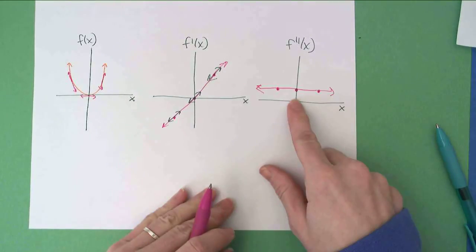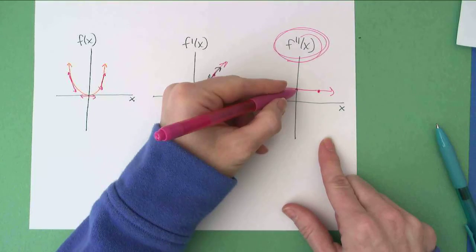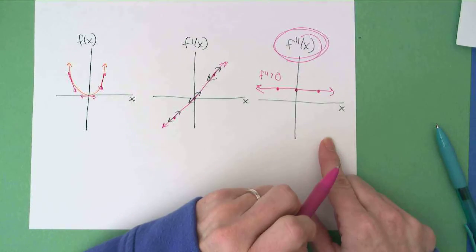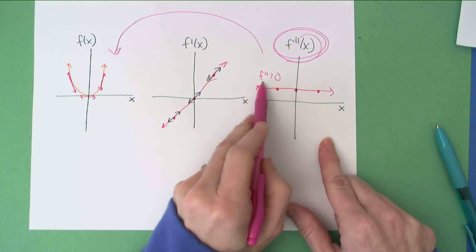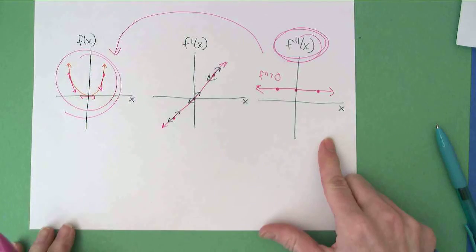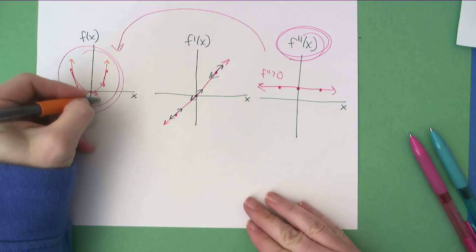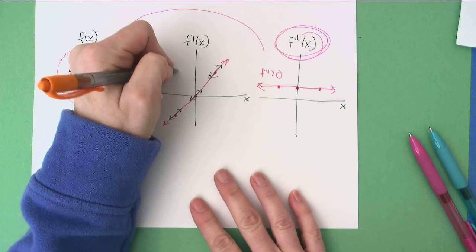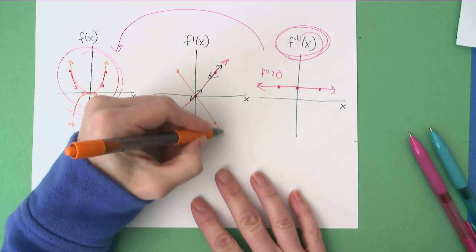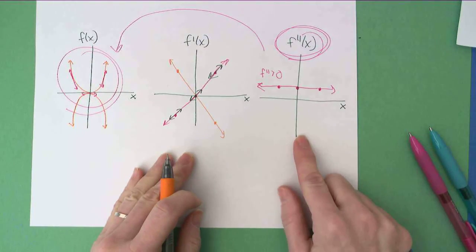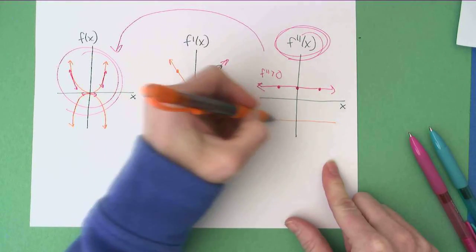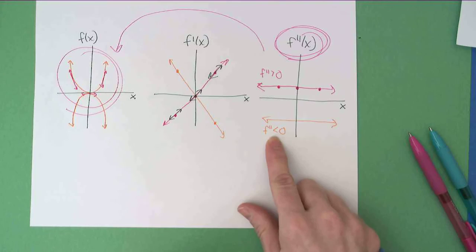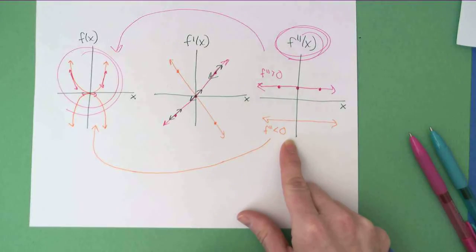Now look at the implications. F double prime is greater than zero. Second derivative always positive, above here, above the x axis. Look what that implies. A positive second derivative implies a graph that's concave up. Look at the flip side. If I had started my graph concave down from the beginning, then my first derivative, slopes, would have gone from positive to zero to negative. And my second derivative, being that all these slopes are negative, would have landed down here. So a negative second derivative implies downward concavity.